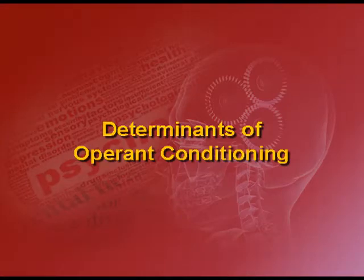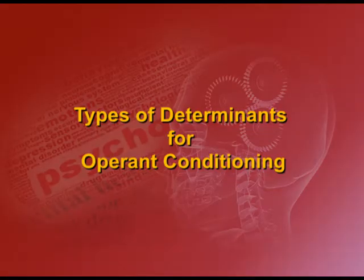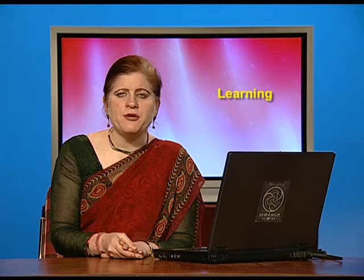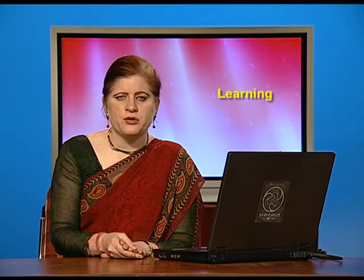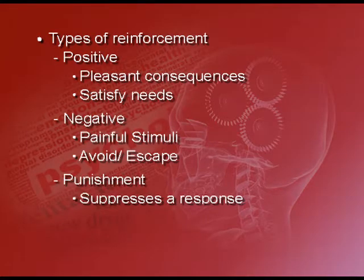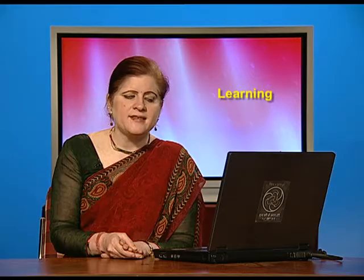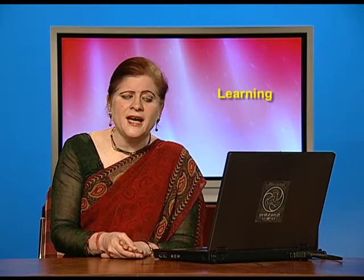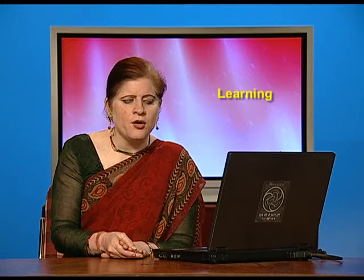What are the determinants of operant conditioning? These are the features that affect the strength of a response — how quickly the learning is established, what factors influence when a subject will learn a certain behaviour. There are six types of determinants. The first is the type of reinforcement used. There are basically three kinds of reinforcers: positive, negative, and punishment. Positive reinforcers result in pleasant consequences — they satisfy certain needs such as quenching of thirst, satisfying of hunger, getting rewarded, getting appreciated, and enhancement of self-esteem.